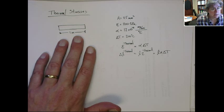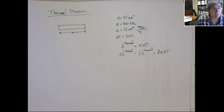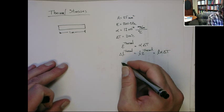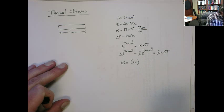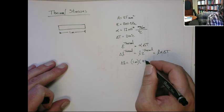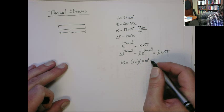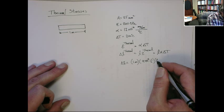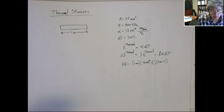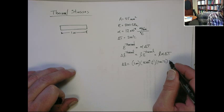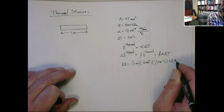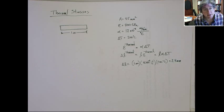So if we heat this bar up, it will expand. Let's figure out how much the expansion is for this. So we'll do that now. Delta L is equal to the original length, which is one meter times alpha, which is 12 times 10 to the minus 6, per degree Celsius, and delta T is 200 degrees Celsius. So we'll calculate this. That gives us 2.4 millimeters. Okay. So it expands 2.4 millimeters.